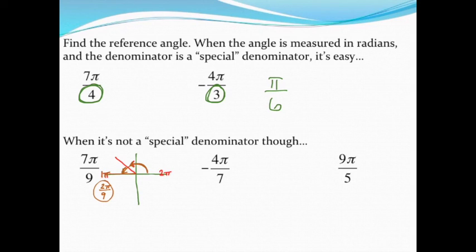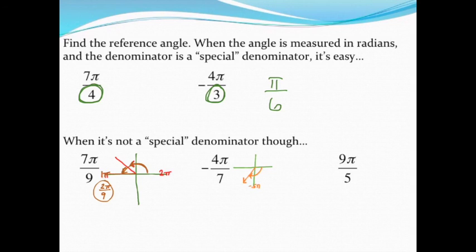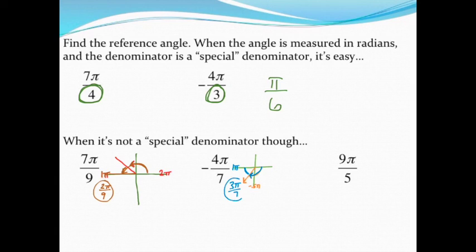Next up, I have negative 4π/7. Seven is not one of my special denominators, and that negative sign just tells me to rotate clockwise instead of counterclockwise, so I'm going to end up in quadrant three, a little past that halfway point — which would be negative 0.5π. Again, I want to think about completing that fraction to get to the x-axis. My reference angle is always positive, so if I've done four-sevenths to get there, that means there are three more sevenths to reach the x-axis. My reference angle is 3π/7.